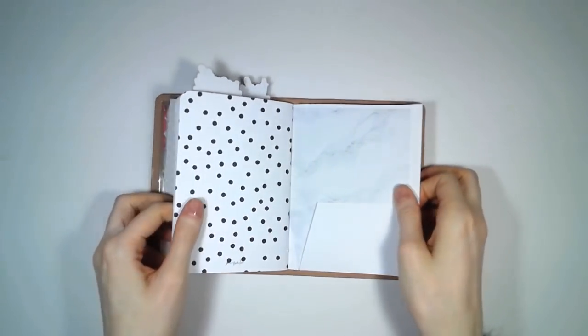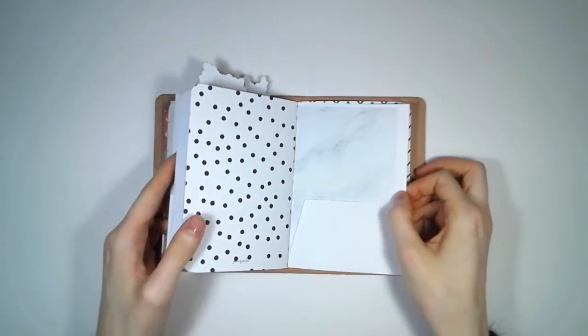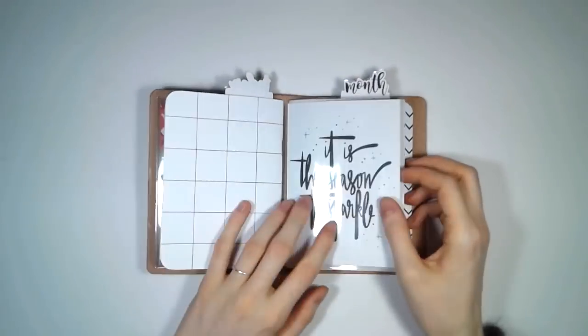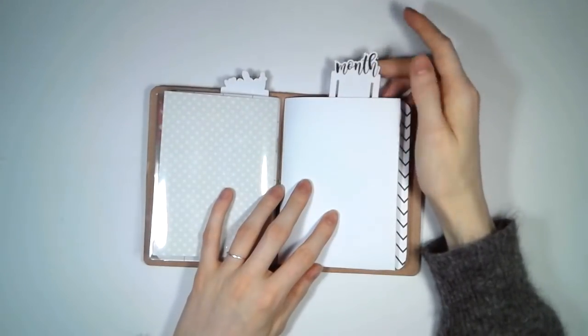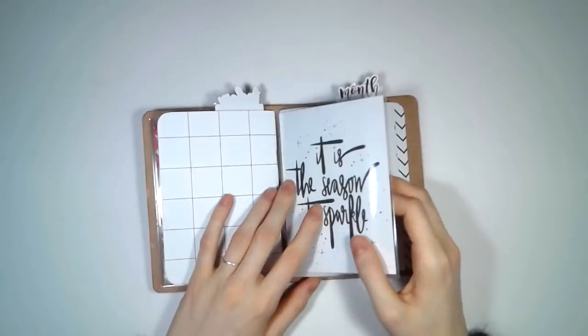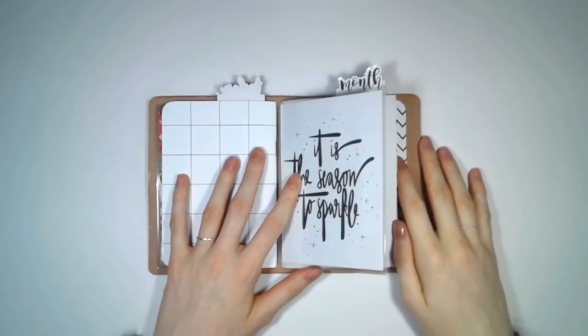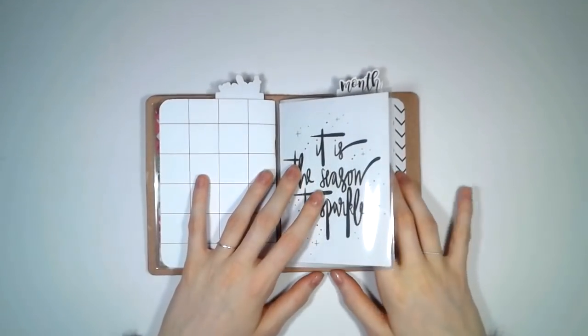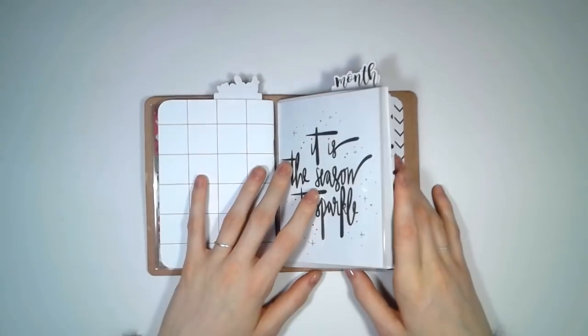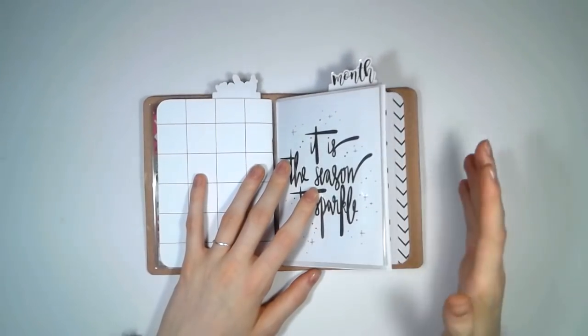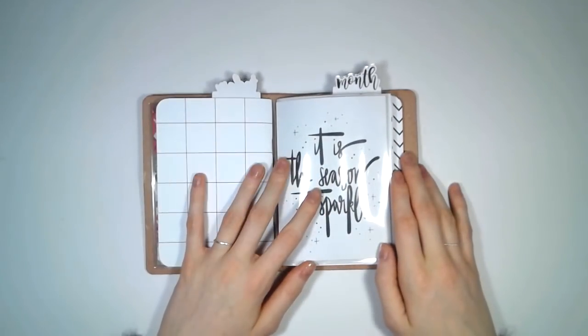The second DIY is a pocket and you can put everything in there: stickers, notes, scrap paper or anything else you want to store in your traveler's notebook. The last thing we're going to make are those tabs at the top. I have one for the month and one for the day so I can easily jump to the day or the month.